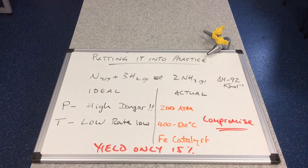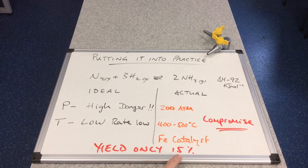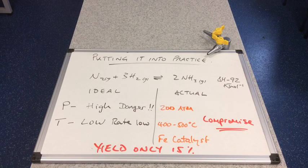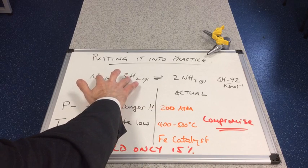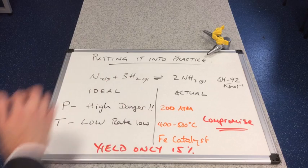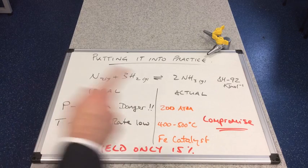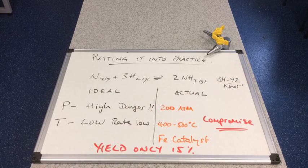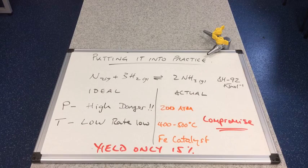With these compromise conditions, the yield is only about 15%. And so there'll be a lot of unreacted nitrogen and hydrogen in the system. And all they would do is recycle that back through and do the process again and again and again.